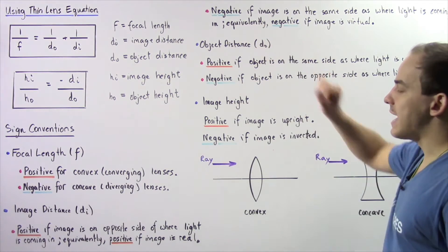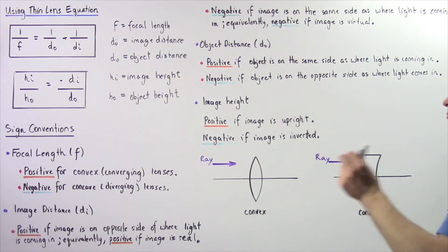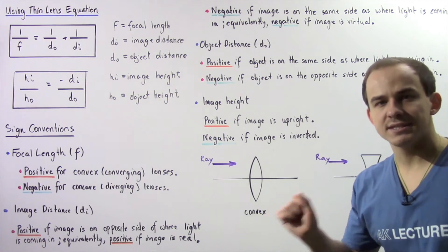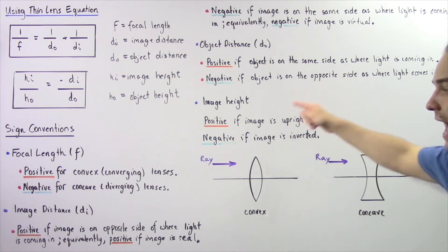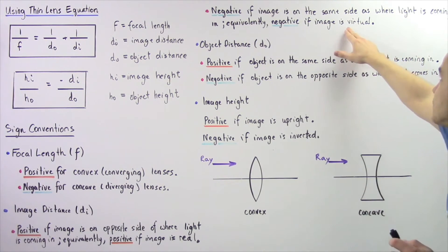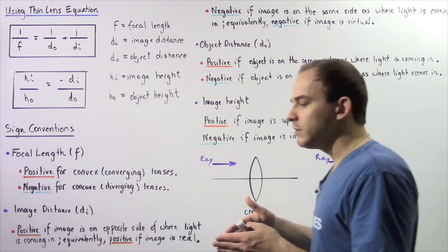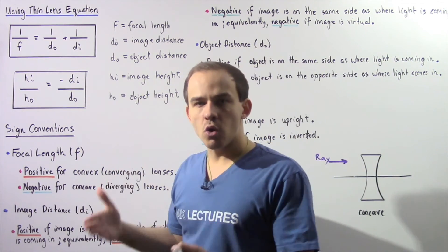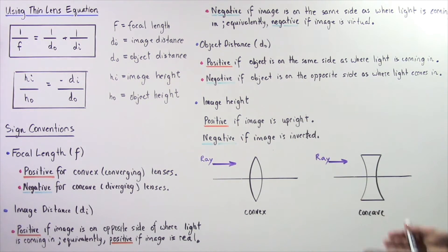The image distance di is negative if the image is on the same side as where the light is coming from, or equivalently, di is negative if the image is virtual. A virtual image is one through which the rays of light do not actually pass. For example, a concave lens is capable of creating a virtual image.